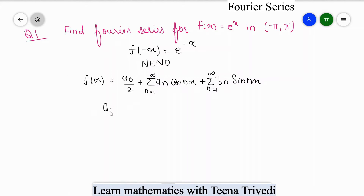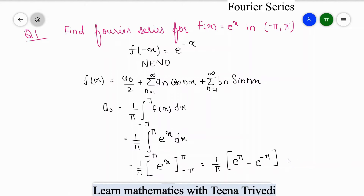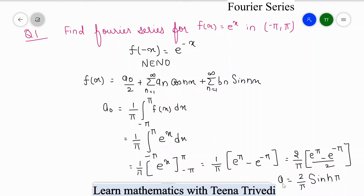The value of a₀ is (1/π) times the integral from -π to +π of f(x) dx. So a₀ = (1/π) ∫e^x dx from -π to +π. The integration of e^x is e^x itself, so applying the limits gives (1/π)(e^π - e^(-π)). Multiplying and dividing by 2, this becomes (2/π) · sinh(π), which is the final value of a₀.